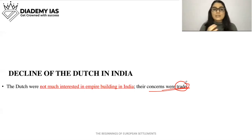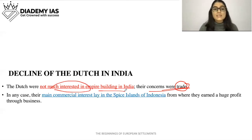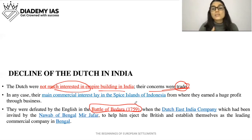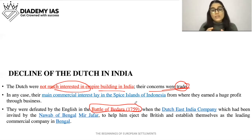The Dutch retired from India because their main concern was trade and profits. Their main commercial interest lay in the spice islands of Indonesia, from where they earned huge profit. They were defeated by the English in the Battle of Bedara. Just as the Portuguese had their decisive decline at the Battle of Swally Hole in 1612, the Dutch decline came at the Battle of Bedara in 1759. The Dutch East India Company had been invited by the Nawab of Bengal, Mir Jafar, to help eject the British.